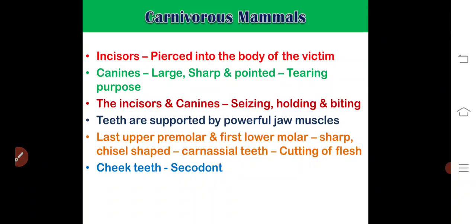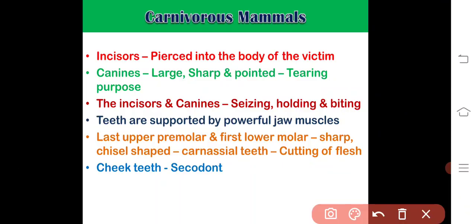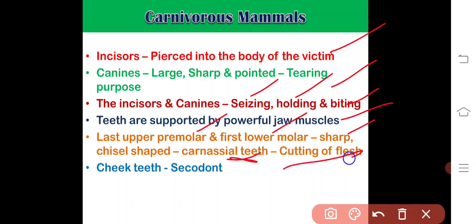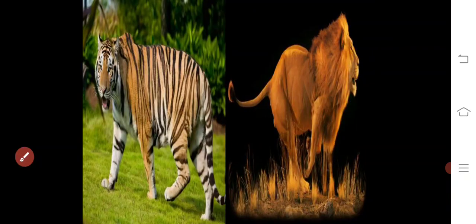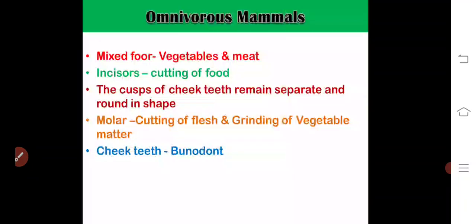In carnivorous mammals: incisors are used for piercing into the body of the victim; canines are very large, sharp, and pointed for tearing. Incisors and canines are used for seizing, holding, and biting prey. Teeth are supported by powerful jaw muscles for mastication. The last upper premolar and first lower molar form the carnassial teeth — very sharp, chisel-shaped, used for cutting flesh. Cheek teeth of most carnivores are secodont type.